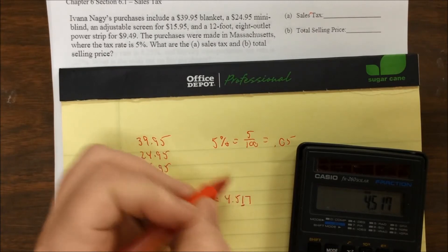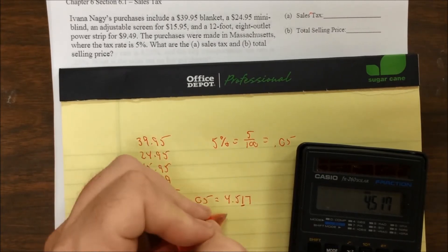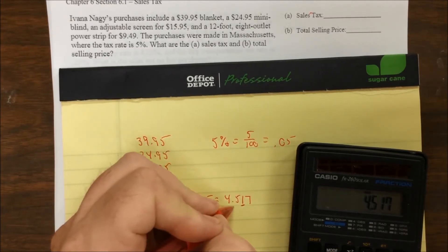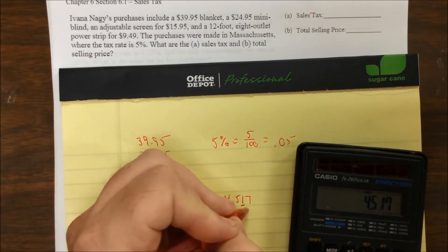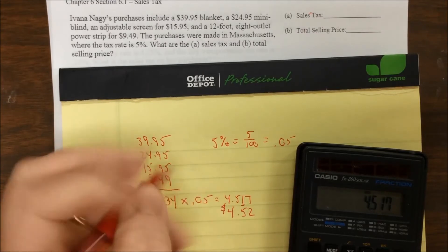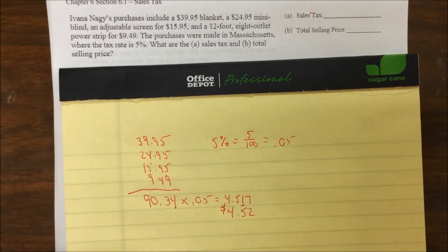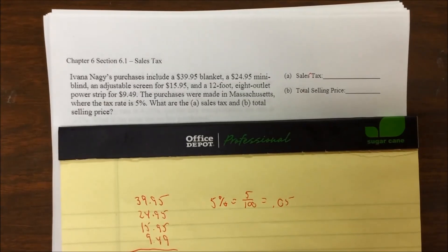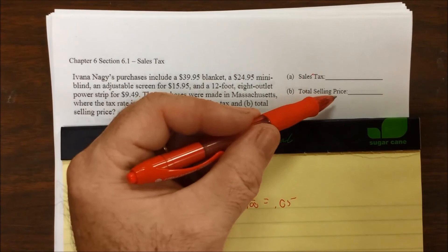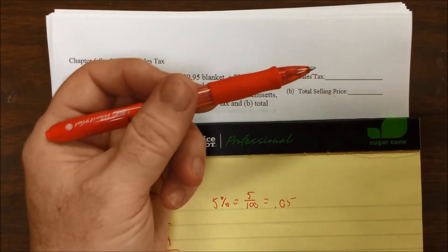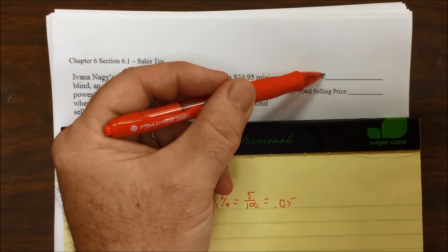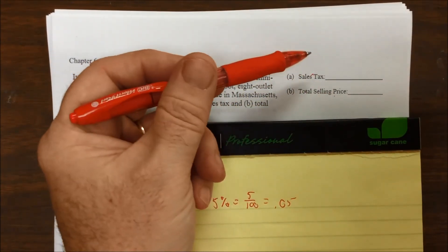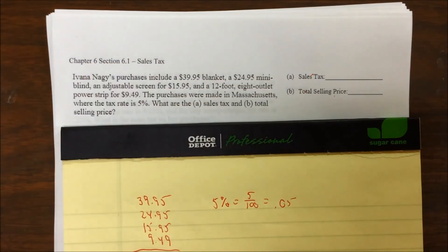Since money only ends with two decimals, you round to the second decimal place, which gives you $4.52. So the total sales tax is $4.52.